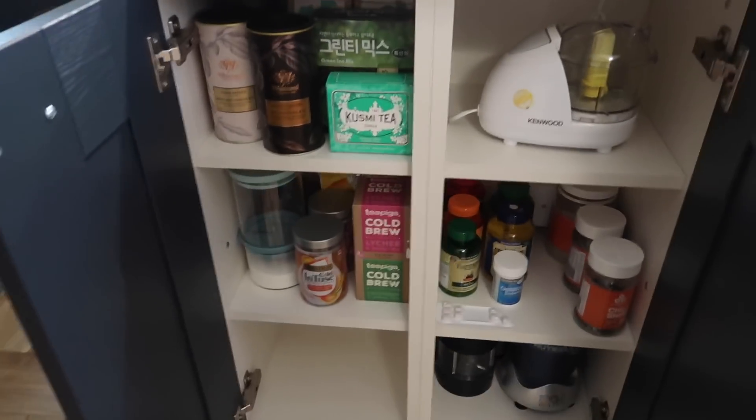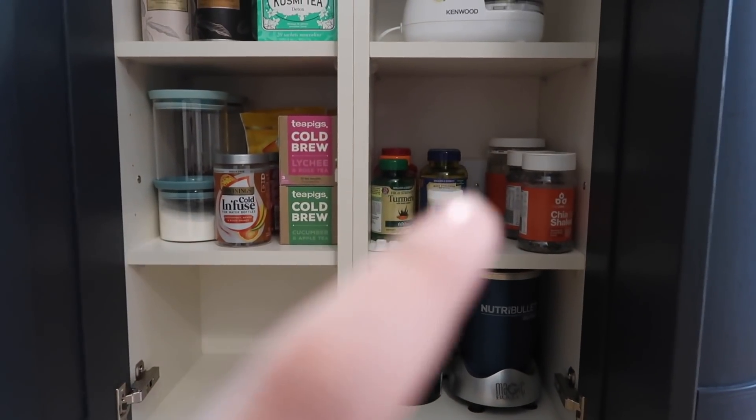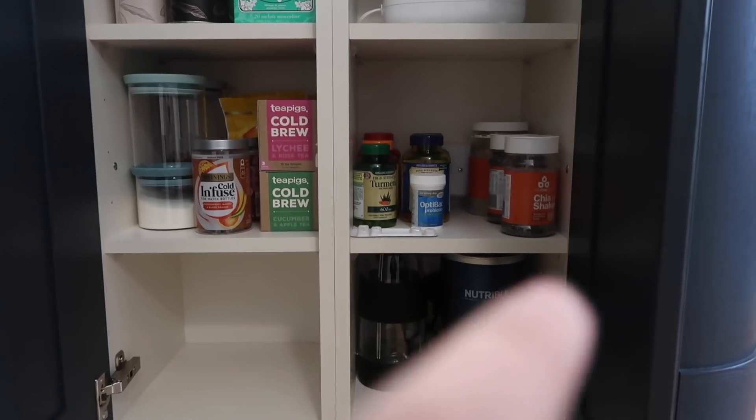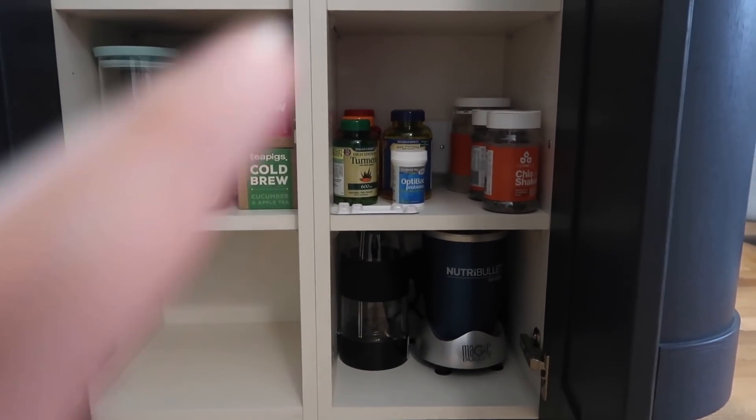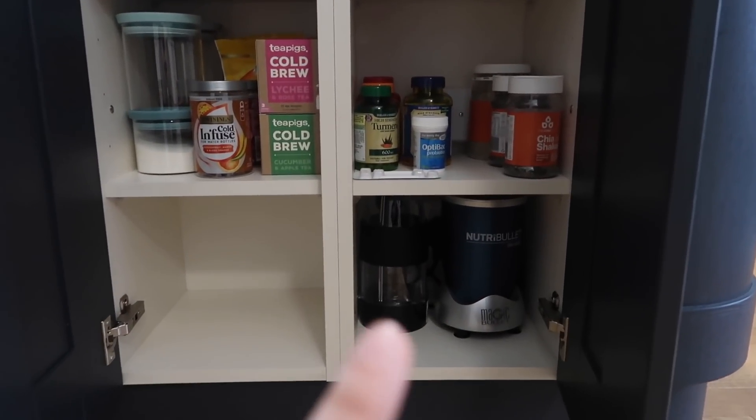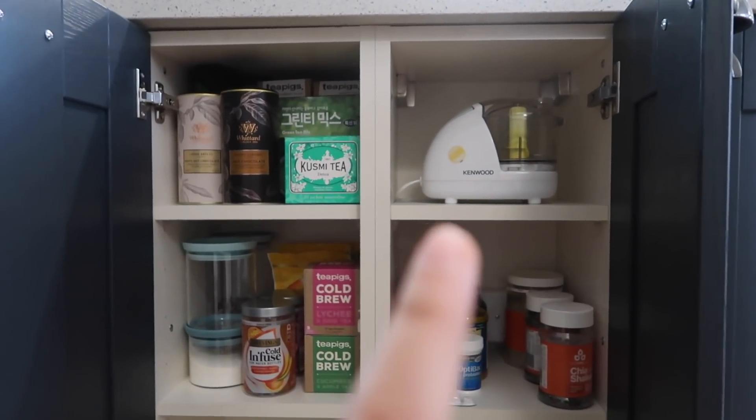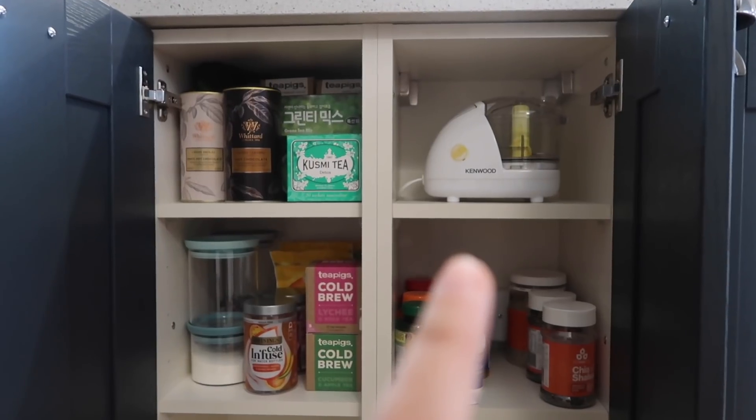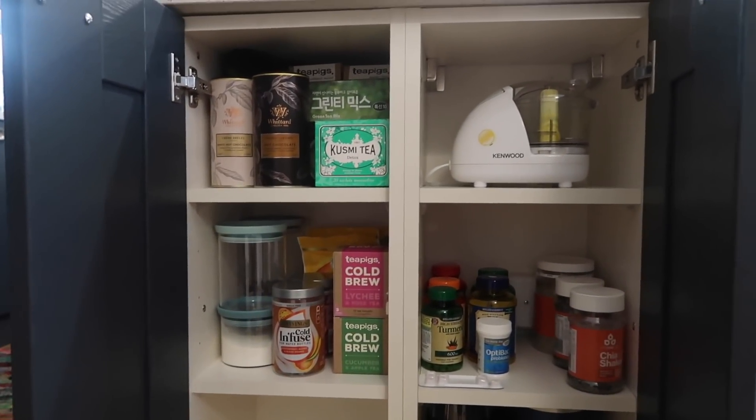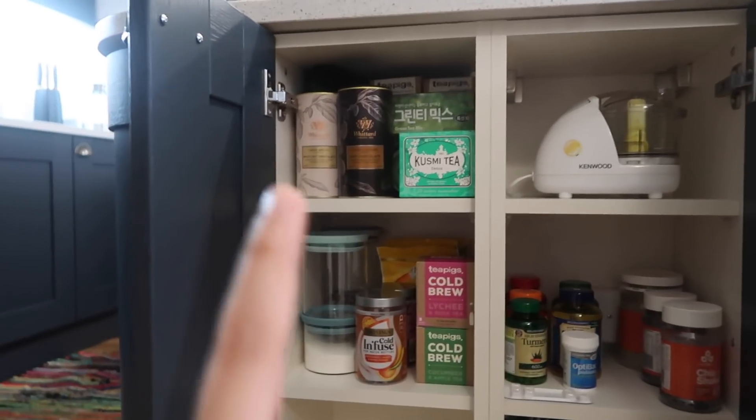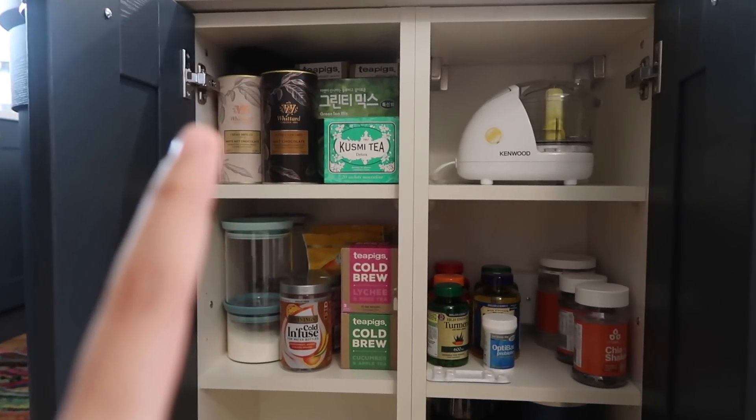Few more things, few more things, then we're done. Some tea over here, some more like supplements and like chia seeds and things like that over here. And then over here I have my NutriBullet. Above that I have my food processor blender thing, I don't know what the difference is. And then over here I've got some more teas.